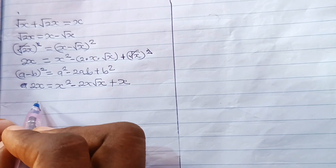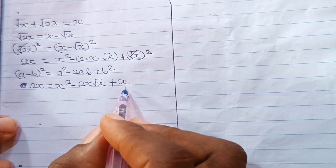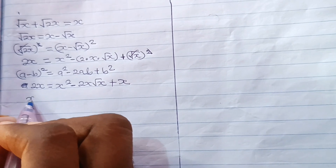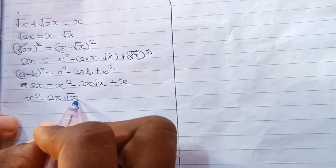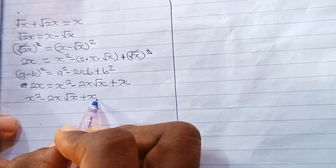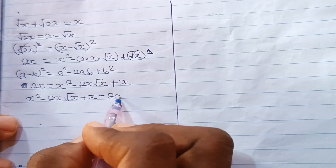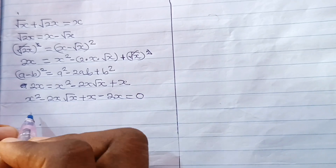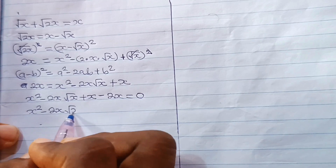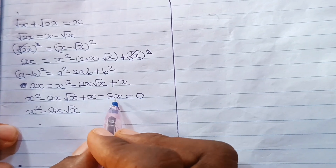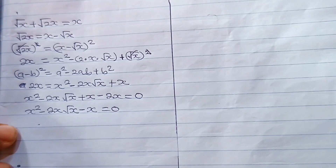So let's collect like terms. Let's transfer this to the other side and solve. We have x squared minus 2x root x plus x, then this 2x crosses over to become minus 2x, equal to 0. So x squared minus 2x root x, and plus x minus 2x gives us minus x, equal to 0.